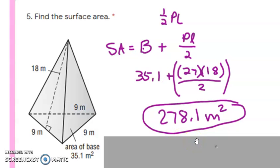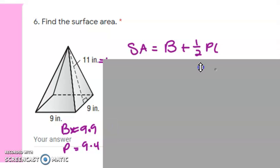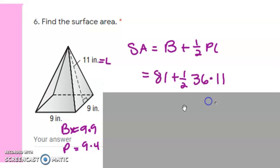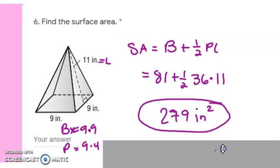The next one is a square base pyramid. The slant height L equals 11. The base is 9 × 9 = 81, and the perimeter is 9 × 4 = 36. So inserting into the formula: area of the base is 81, plus one-half times the perimeter 36 times the slant height of 11. When you calculate that out, you should get 279. Practice it, please.